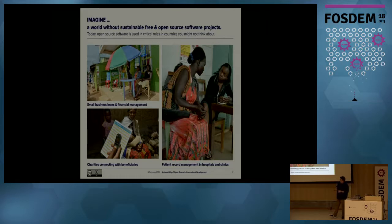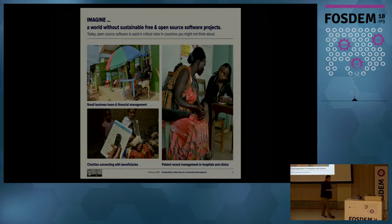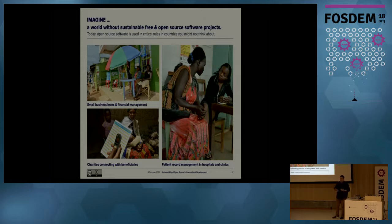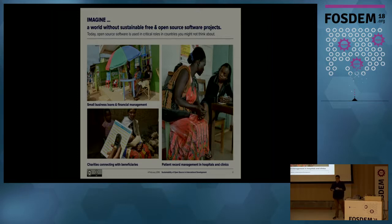I want to give you a few examples. First, in financial technology and financial services, people are using open source software literally in 80% of countries right now every day to conduct financial transactions — it may be micro-lending, it may be getting market prices in open markets in their cities and villages, ultimately helping people trade and shop more fairly. In healthcare, open source is really huge. It's used in everything from information management to managing patient records, helping people manage their diseases and their medication.